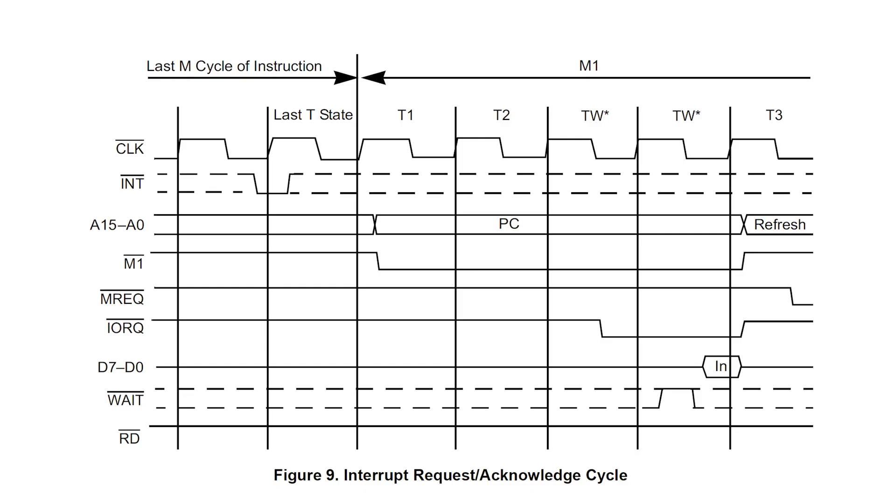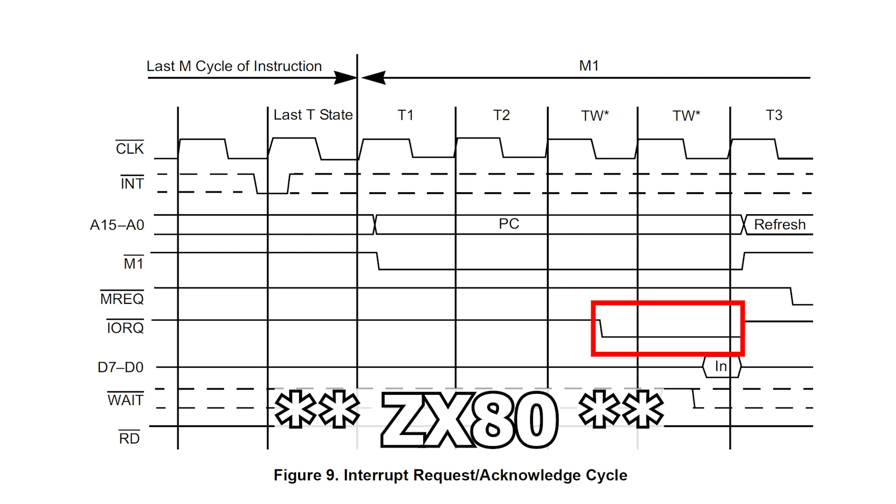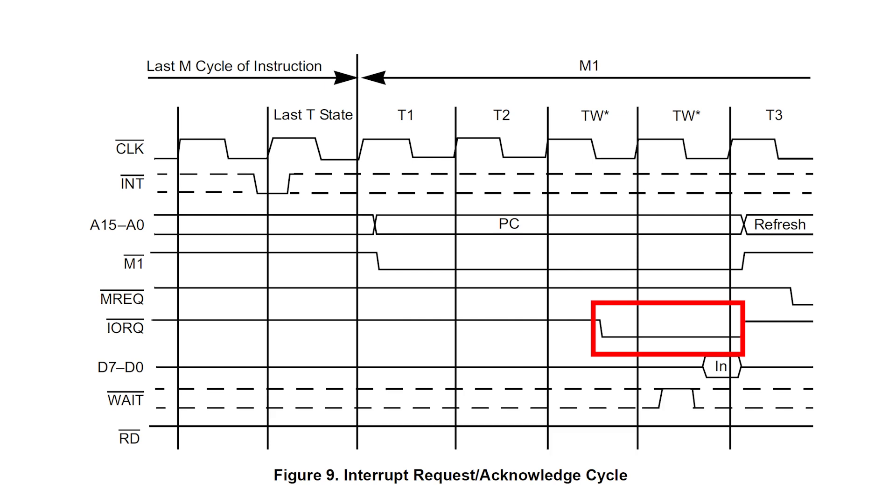We know that after we've exited HALT, we enter the interrupt acknowledge sequence, which means we'll get this one shot of IO-REC for about one clock cycle, and the Z80 in particular uses this to generate the horizontal sync signal.